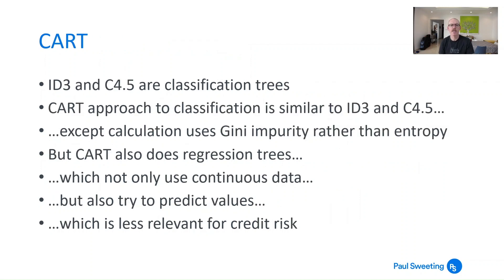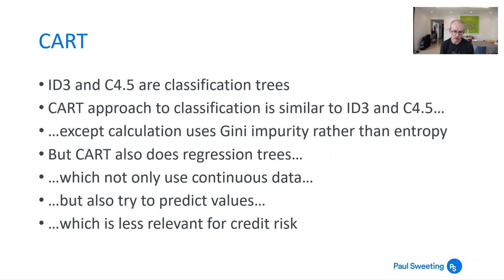ID3 and C4.5 are classification trees. CART — Classification and Regression Trees — has a similar approach but uses Gini impurity rather than entropy, and it also does regression trees. Regression trees don't just use continuous data; they also try to predict continuous values, which in certain scenarios can be useful. But if we're looking at credit risk where what we're trying to do is classify rather than come up with numbers, it's slightly less useful, so it's not something I'm going to look at in more detail here.